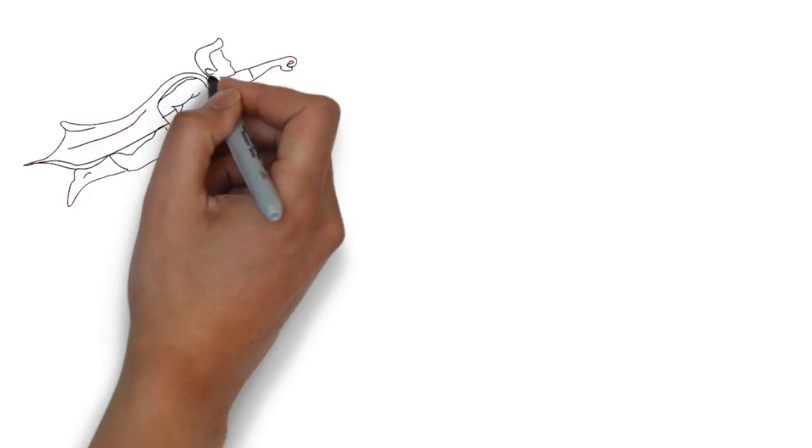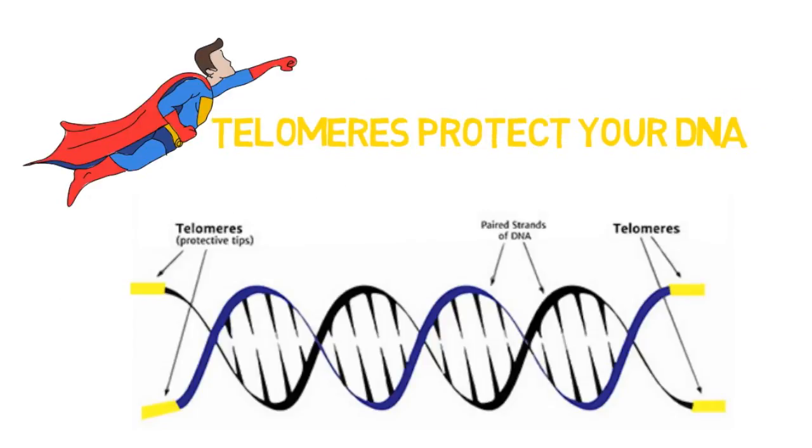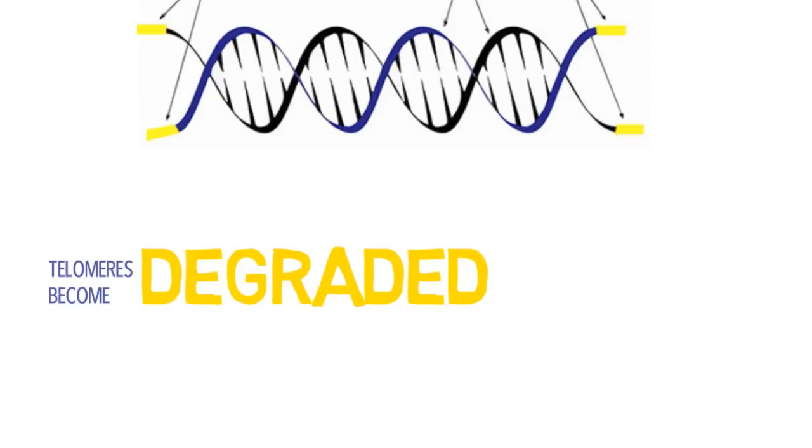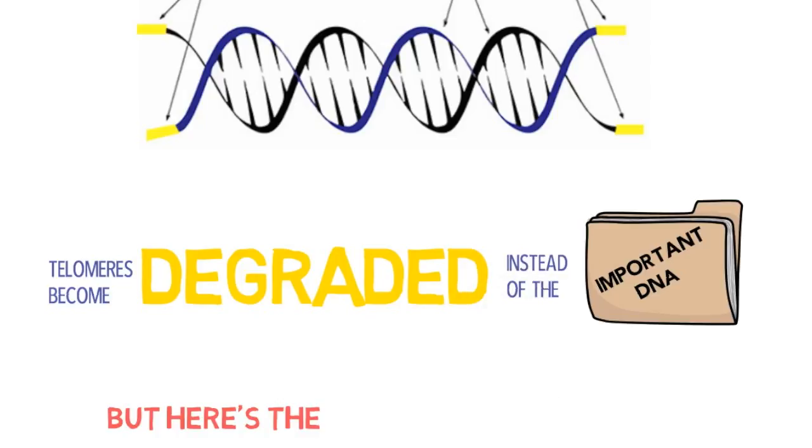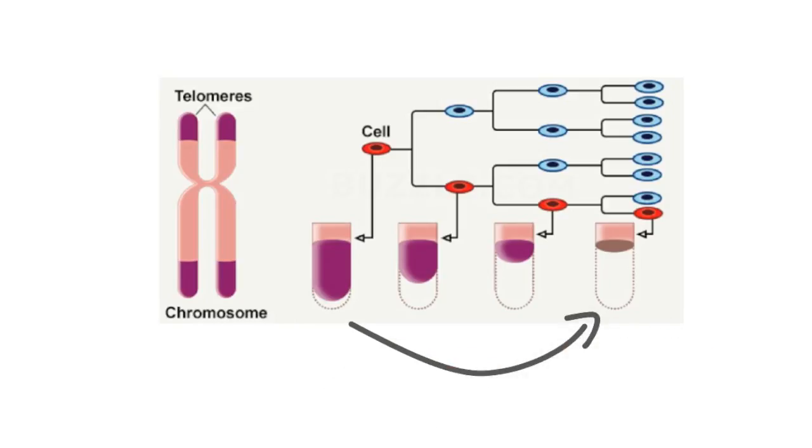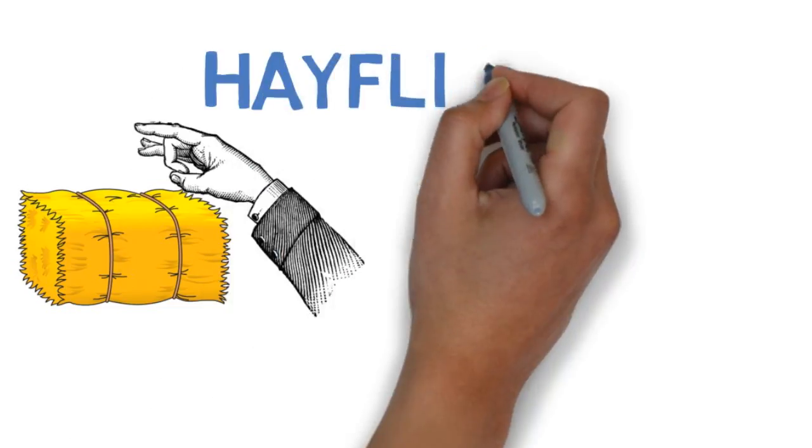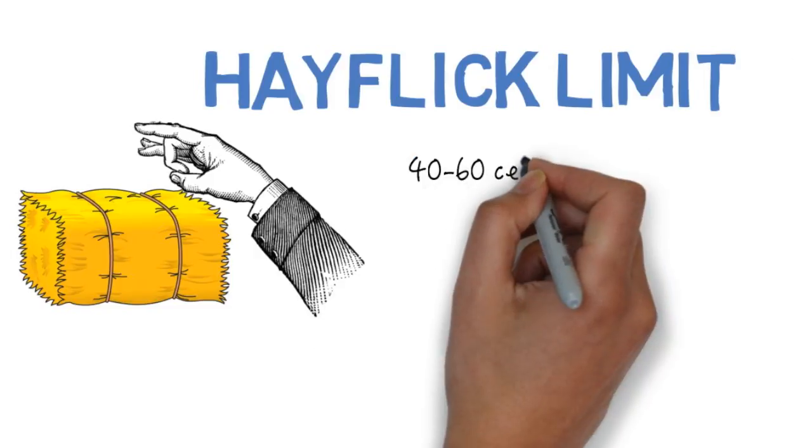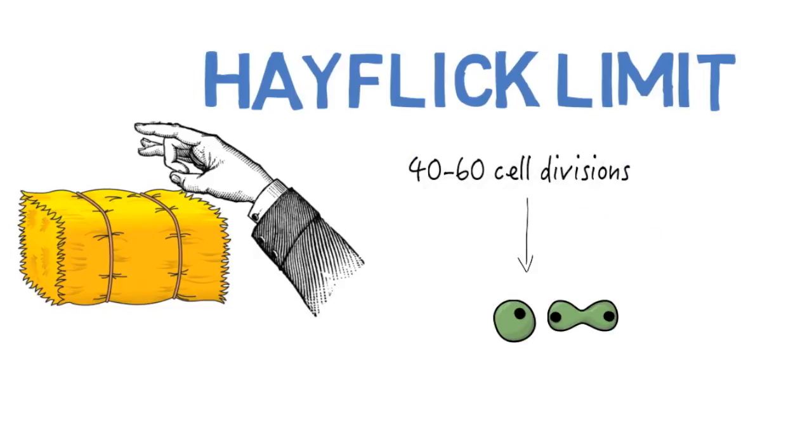But telomeres protect the ends of your DNA so that the non-coding TTA-GGG sequences are degraded, not the important stuff. But here's the catch. Telomeres, too, get shorter with each replication. At a point, they reach a limit called the Hayflick limit, which says that a cell can only divide 40 to 60 times before it stops growing.